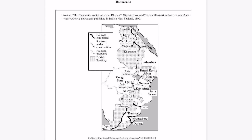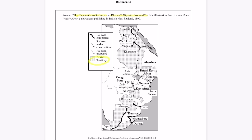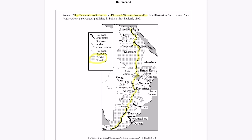Document four is a map of Africa — specifically the Cape to Cairo railway, proposed by Cecil Rhodes, identified in the source as a British imperialist and entrepreneur. The map shows British territories, and the plan is to create a railroad going all the way from the top of British territory down to the bottom. This one is clearly about consolidation of power in foreign lands.